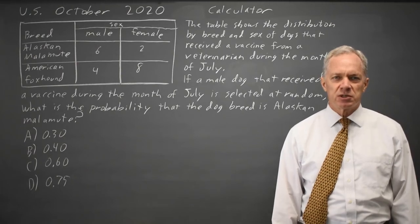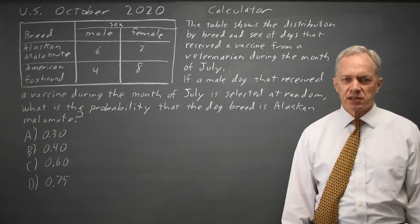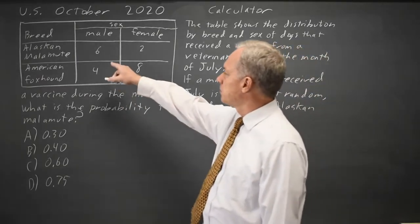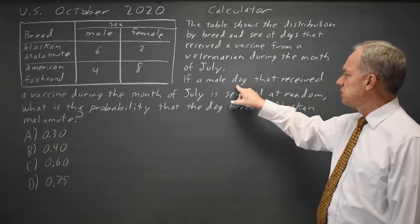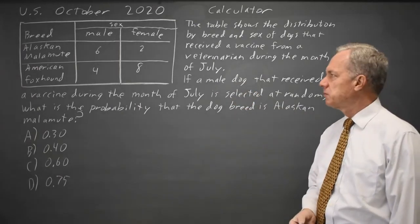This question is from the October 2020 U.S. SAT calculator section. College Board gives us a table of values, and they say if a male is selected, what is the probability that that male is a Malamute?